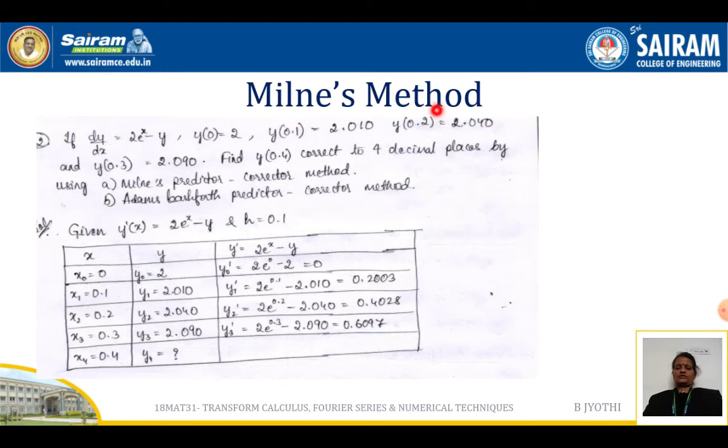y(0.2) = 2.040, y(0.3) = 2.090. Find y(0.4) correct up to 4 decimal places by using Milne's predictor corrector method and Adams-Bashforth predictor corrector method.